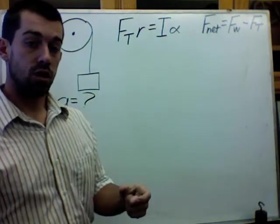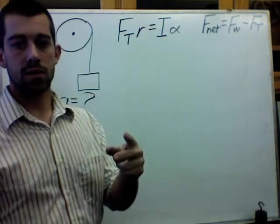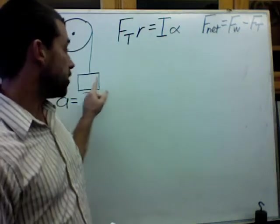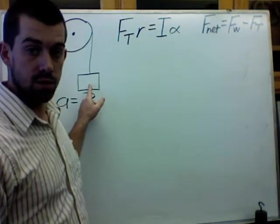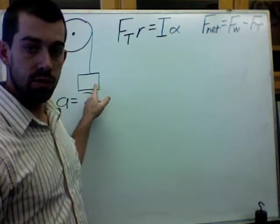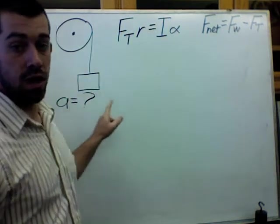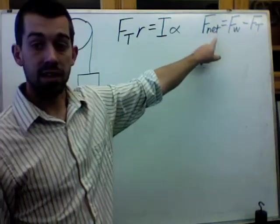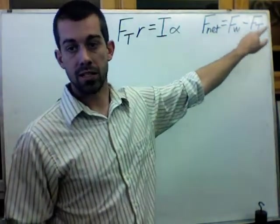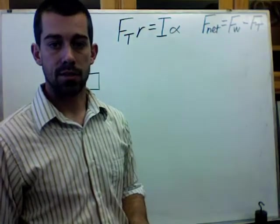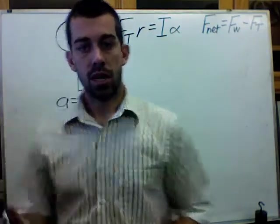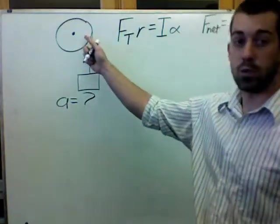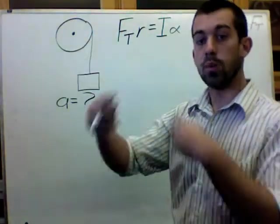Now in order to solve for the acceleration, we know there's two things that are involved. One, the forces on the weight help to determine the acceleration, and we know that we've already described the force of weight by saying that the net force equals the force of weight minus the force of tension on that hanging mass.